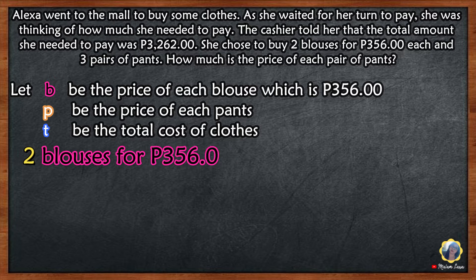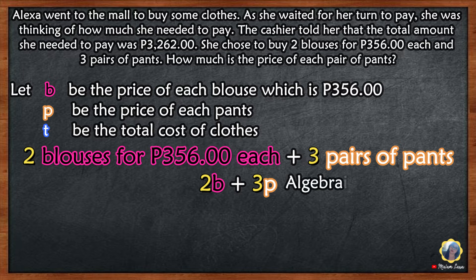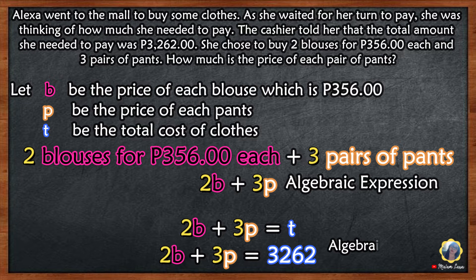Now, translate the prices: 2 blouses for P356 each plus 3 pairs of pants gives us 2B plus 3P equals T, where T represents the total cost of clothes. The algebraic equation is 2B plus 3P equals 3,262.